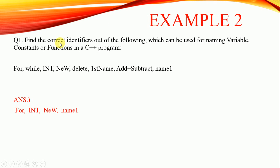Example 2: Find the correct identifiers out of the following which can be used for naming variable, constant, or function. From this list you have to identify which names are suitable for using as an identifier. First word 'For', but here the F is capital, so it can be used as an identifier. 'While' is a keyword.